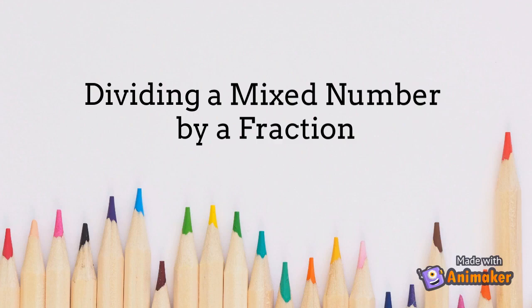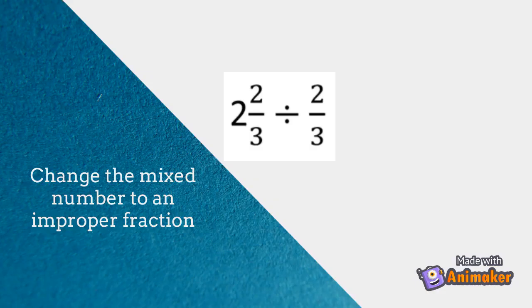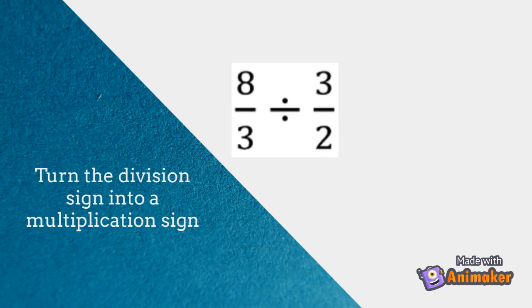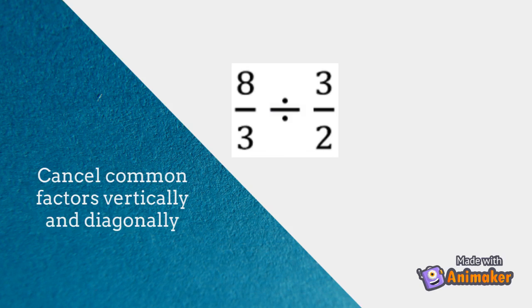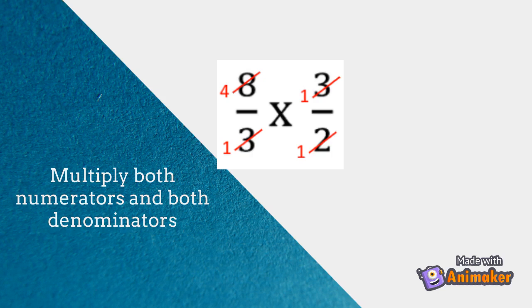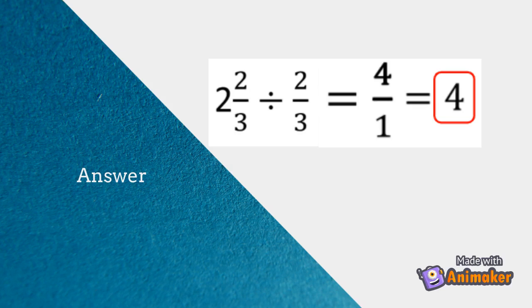Dividing a mixed number by a fraction. To divide mixed numbers by a fraction, first change the mixed number to an improper fraction: 2 and 2 thirds becomes 8 thirds. Find the reciprocal of the divisor. Turn the division sign into a multiplication sign. Cancel common factors vertically and diagonally. Multiply both numerators and both denominators: 4 times 1 equals 4, and 1 times 1 equals 1. So 2 and 2 thirds divided by 2 thirds is 4.